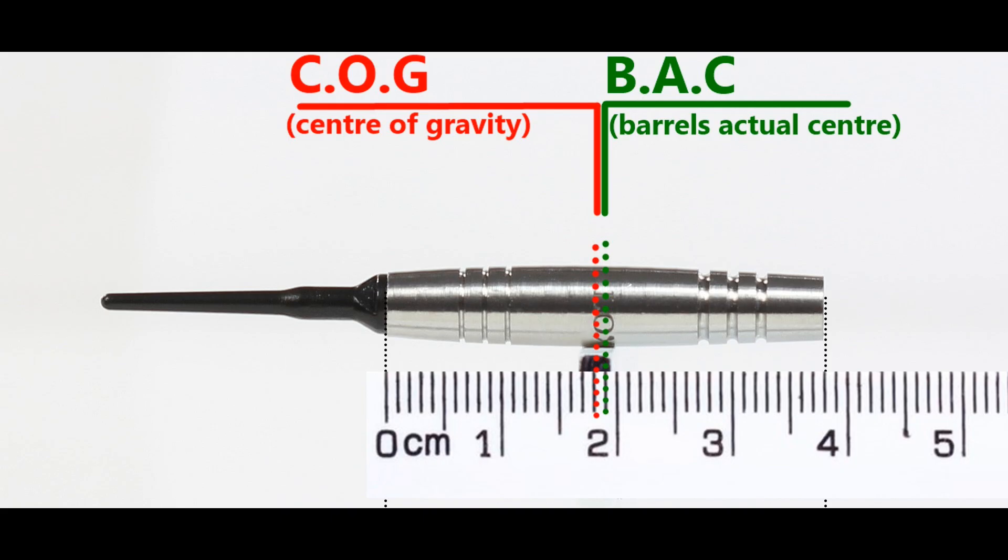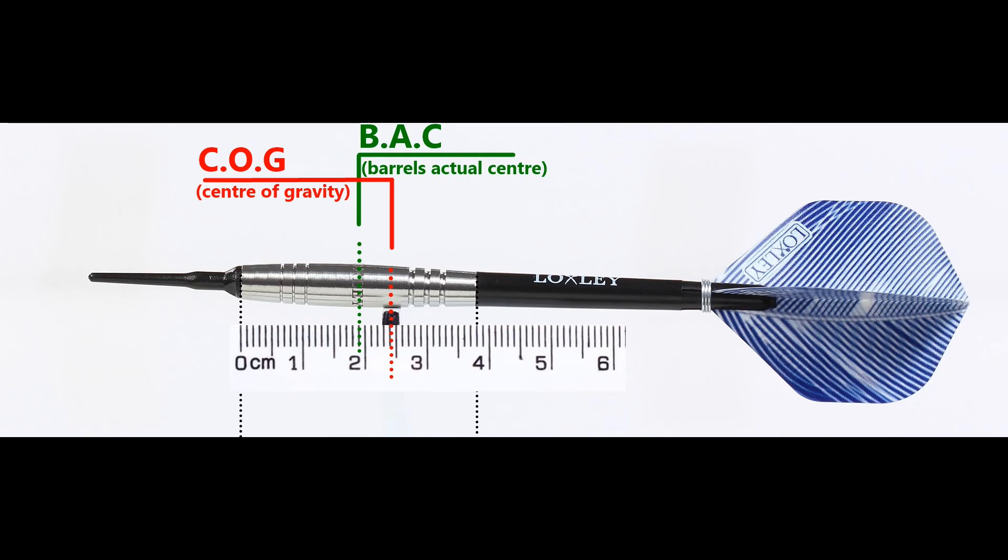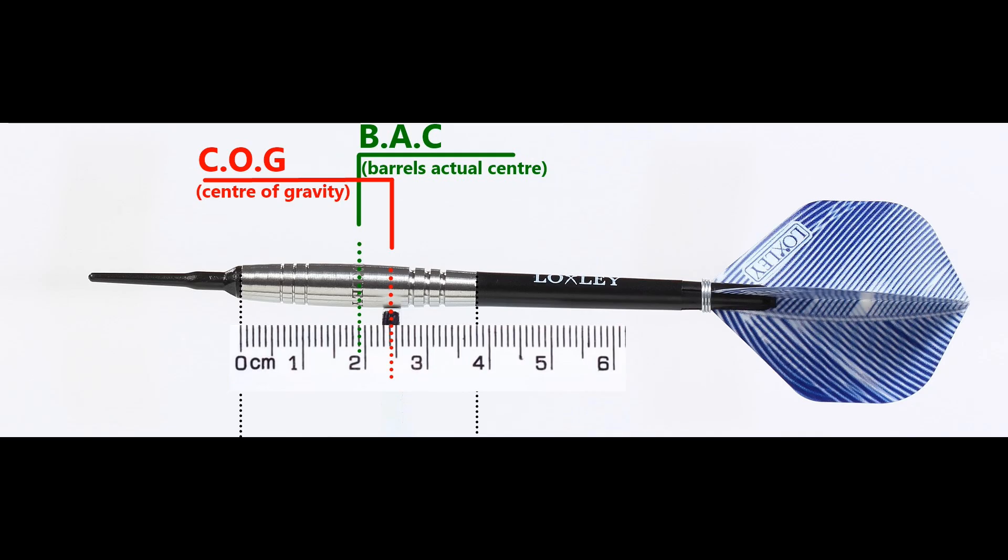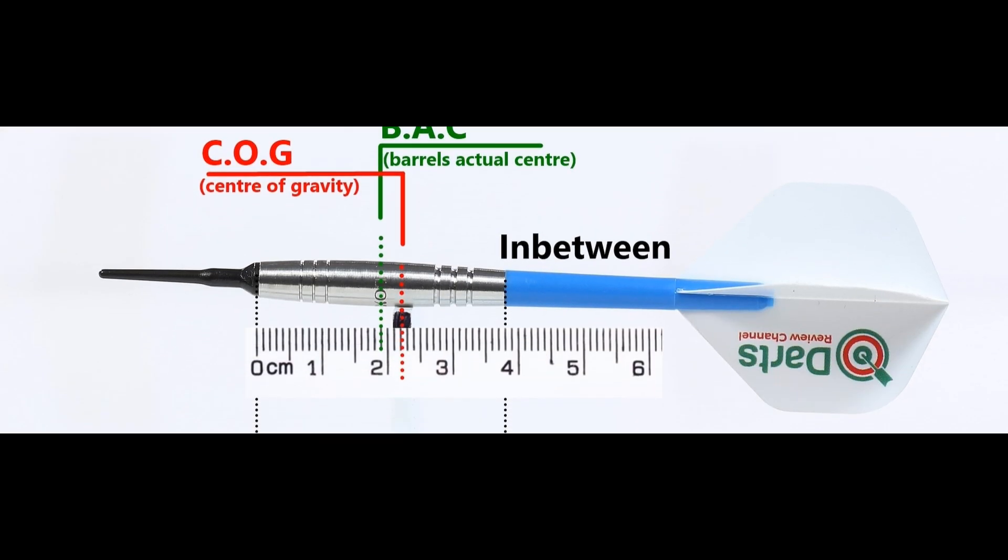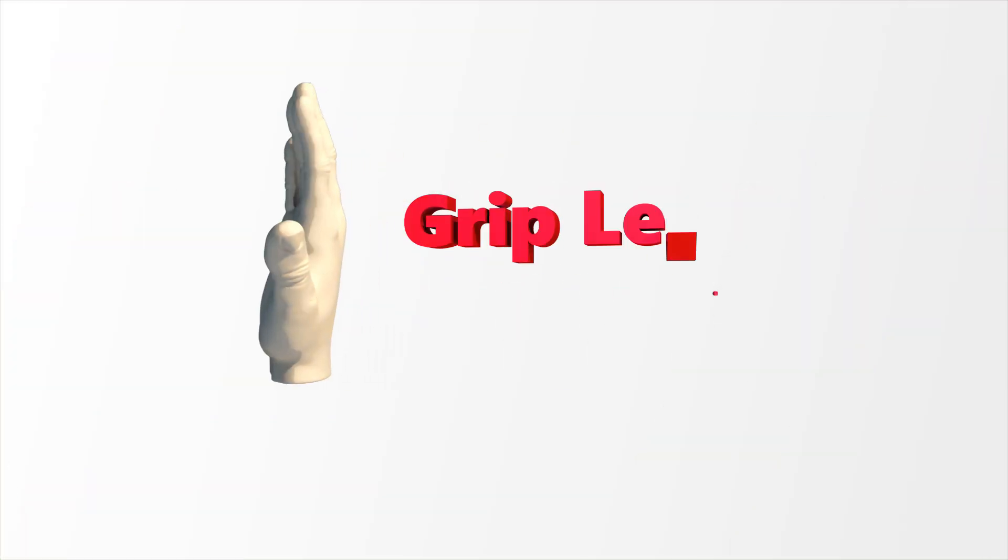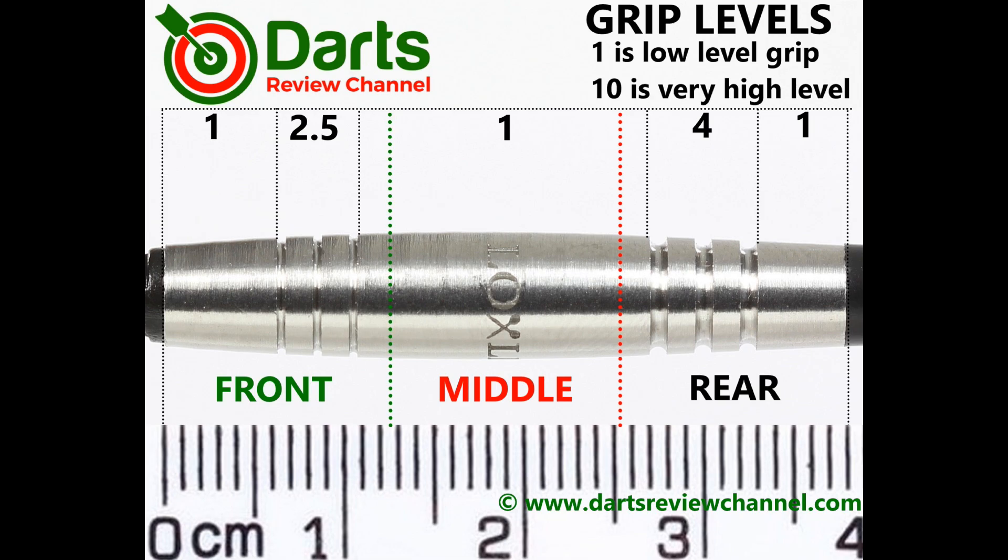This is the balance with just the soft tips attached and with the supplied setup. And this is the balance with medium in between short nylon stems and standard flights. It's pretty low level grip overall just that small section which is around about four.